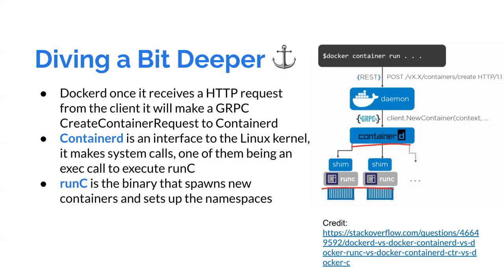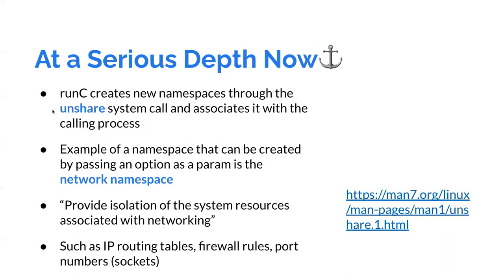So runC here is really what does all the heavy lifting when it comes to the creation of the container. It's a binary that, when run, will spawn a new container and sets up all of the required namespaces for more system calls to get the isolation. The system call that runC will repeatedly make is the unshare system call. This will create new namespaces associated with that runC instance. Another example, apart from the process ID namespace, is the network namespace, which isolates system resources to do with networking — IP routing tables, firewall rules, port numbers, all that. So there would be no conflicts with the host machine or any other containers.